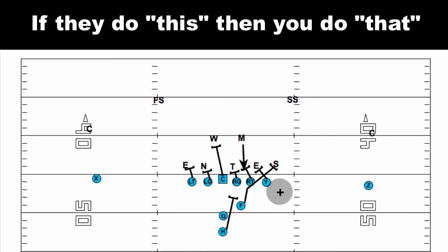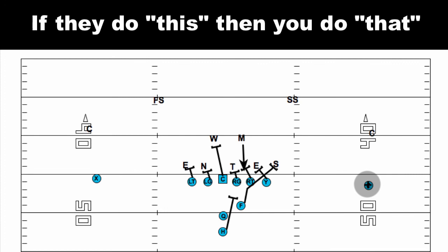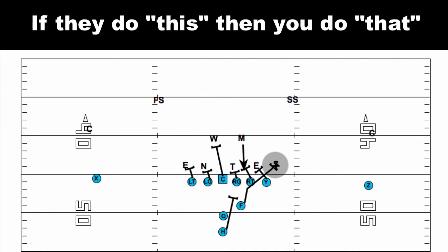Those are just a couple of examples of if they do this, then what do you do, and how you can build that into your game plan. There are unlimited ways to do this. In my other course, also included in the Pro Style Spread Offense system, you get the bubble screen course — if they leave him uncovered, you throw the bubble; if they cover him up, you throw the bubble slant or the bubble go. You're identifying what they're showing you, which play gets the best matchup and attacks the open gaps and uncovered players.